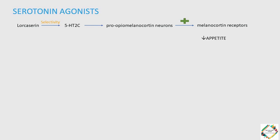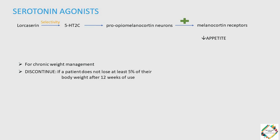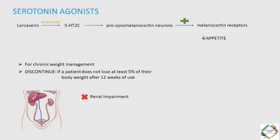The pro-opiomelanocortin neurons play a very important role in feeding behavior in our body. This drug is used for chronic weight management. If the patient does not lose at least 5% of their body weight after 12 weeks of use, then it is recommended to discontinue the drug. This drug is extensively metabolized in the liver to 2 inactive metabolites that are then eliminated in the urine. It is important that this drug is not recommended in severe renal impairment patients.